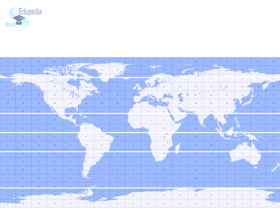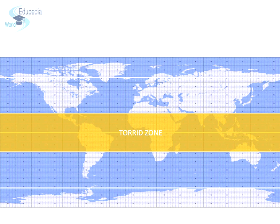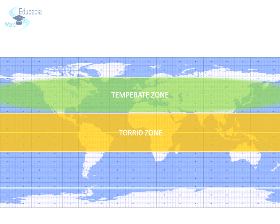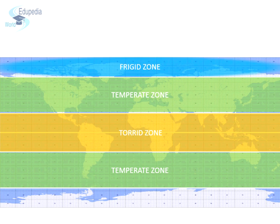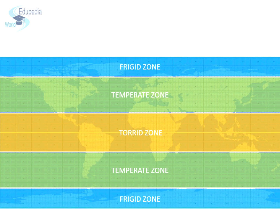We find three different types of heat zones on earth. First, the torrid zone, also known as the tropical zone. Second, the temperate zone, also known as the pleasant zone. And finally, the frigid zone. Let us look at each of these zones one by one.